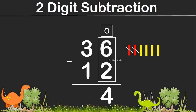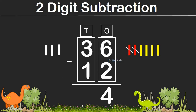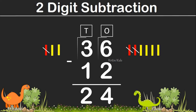Then we will go to the numbers on the tenth position. Here we have 3 and 1. So let's draw 3 lines. And how many lines we have to cut? We have to cut 1 line. So remaining we have 1, 2. That is 2. So 3 minus 1 is 2. 36 minus 12 gives us 24.